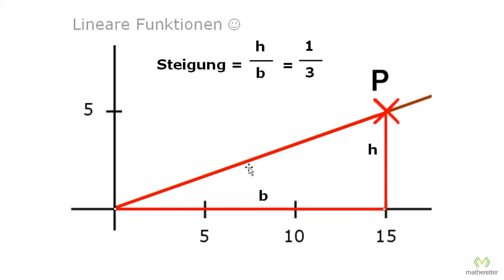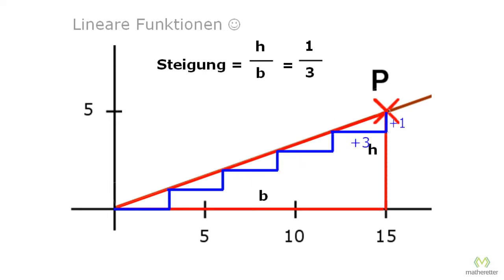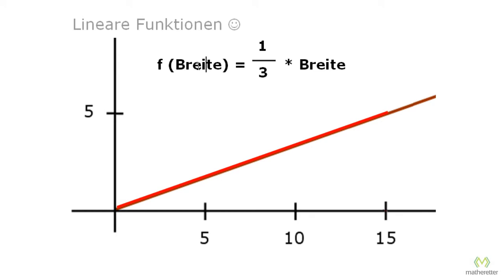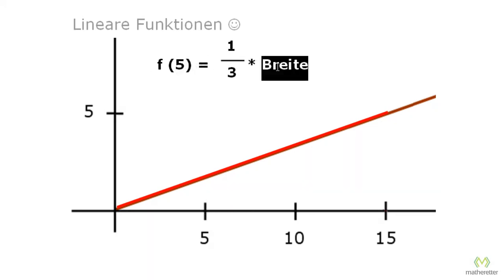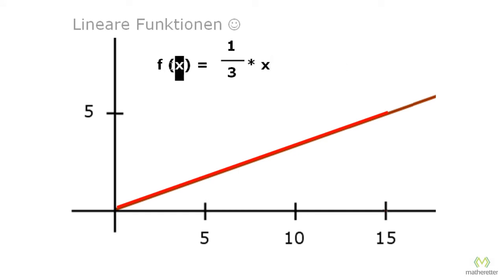Now the question is, how do we find a description or formula for it? If we take any width and multiply it by one third, the graph should give the same result. Let's test it: with a width of 5, we have one third times 5, which equals 5 thirds, around 1.667. It would be really hard to read this value on the left axis, but now we can just calculate it. So now I can use any value and multiply by one third to get the height.